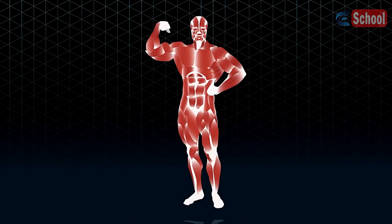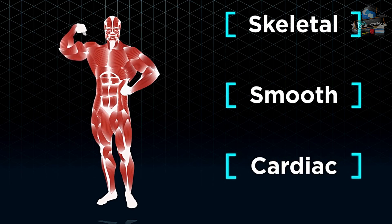In conclusion, there are three types of muscles found in our body, all of which have specific structures and functions.